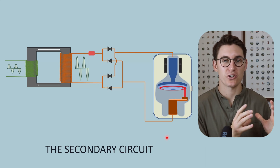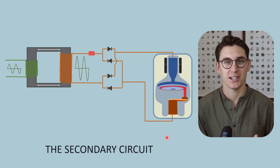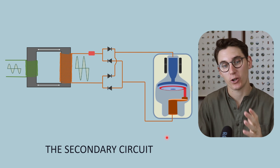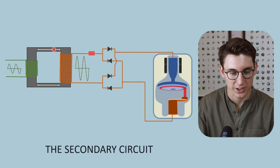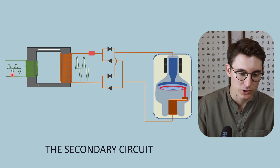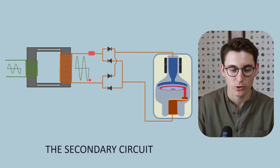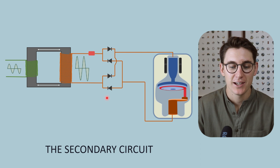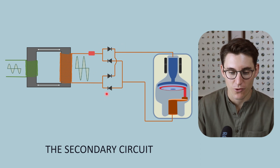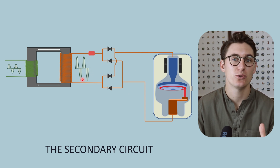We've seen how our primary circuit allows us to select our kVp and determine our exposure time. We've also seen how, in combination with the secondary circuit through the process of step-up transformation, we've taken a low voltage alternating current and transformed it into a high voltage alternating current. Now let's look at the secondary circuit and how it uses the process of rectification to change this alternating current into direct current.